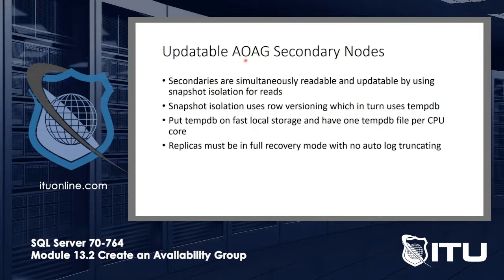For updatable always-on availability secondary nodes, the secondaries are simultaneously readable and updatable using snapshot isolation. Snapshot isolation uses row versioning, which in turn uses tempdb to make copies. With that in mind, put tempdb on fast local storage and have one tempdb file per CPU core — so if you have eight cores, have eight tempdb files. All replicas must be in full recovery mode, and do not truncate the log — no auto log truncating.